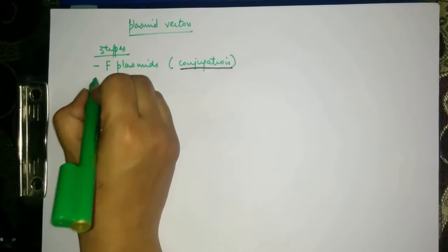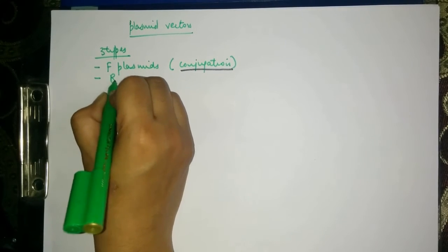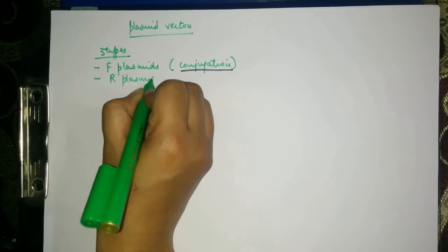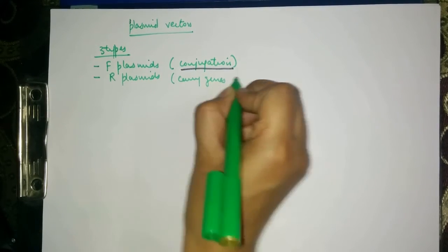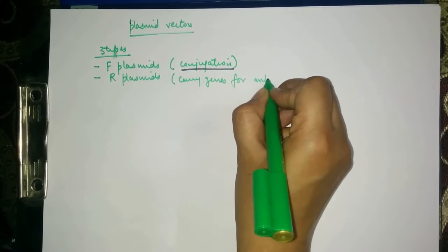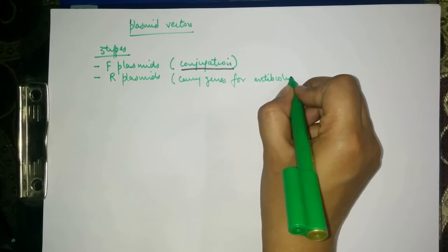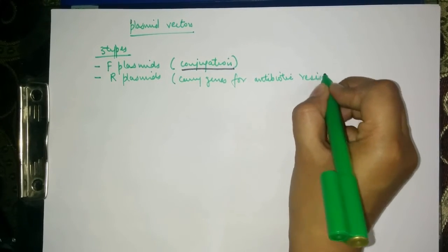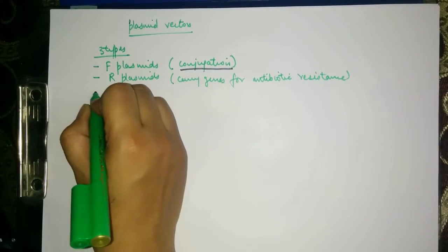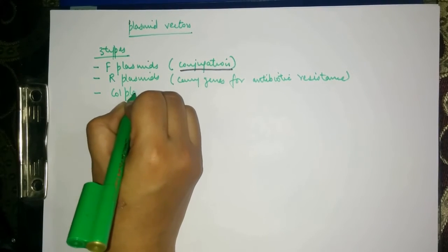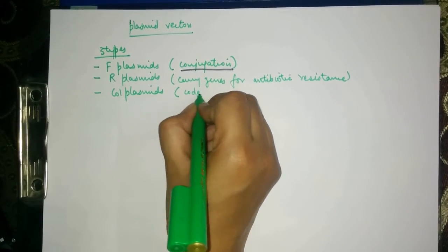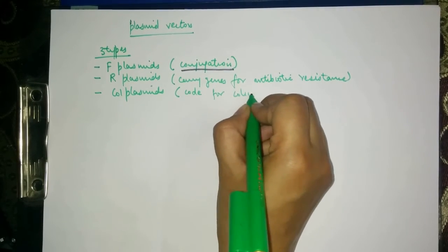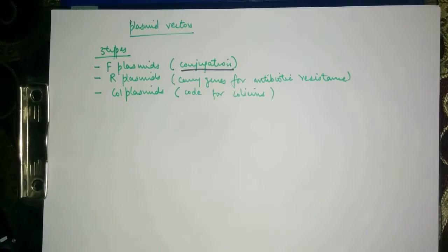The second category of plasmids is called R plasmids and these plasmids carry genes for antibiotic resistance. And the third category is called Col plasmids. The Col plasmids code for colicins which we shall discuss in later videos.